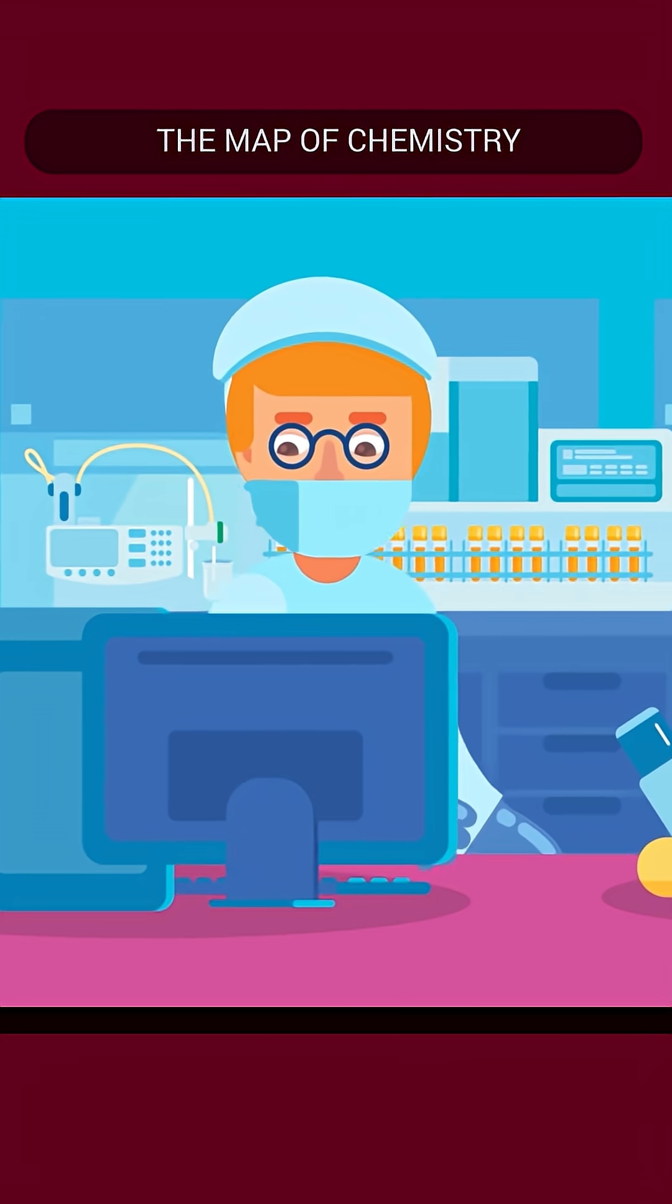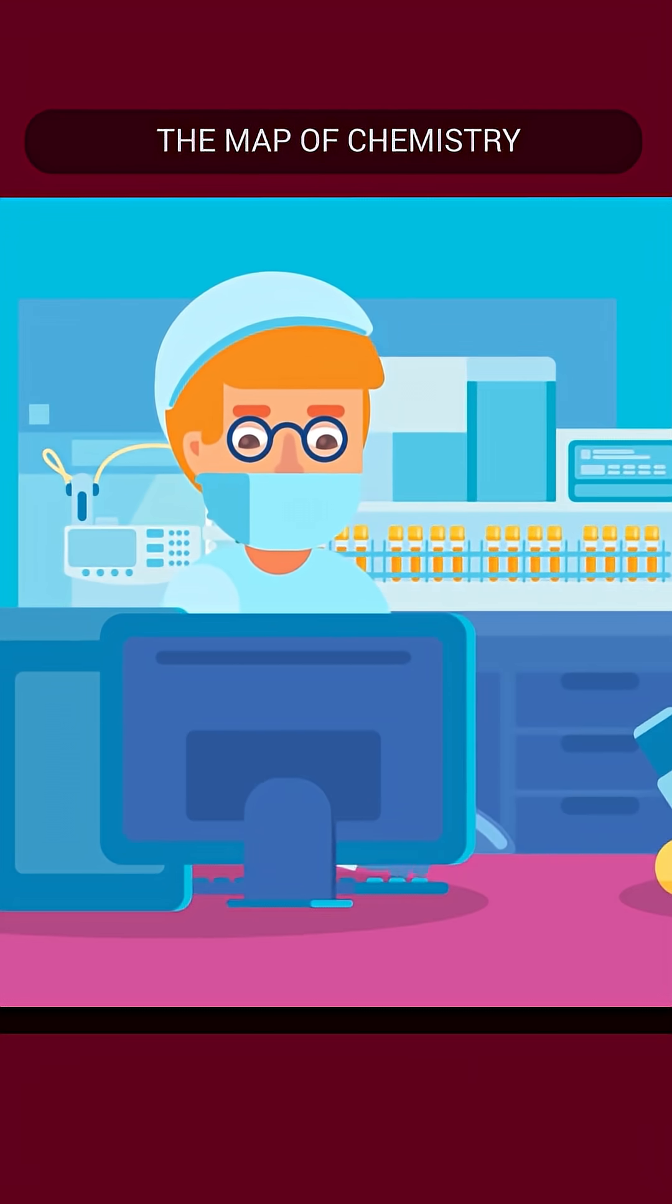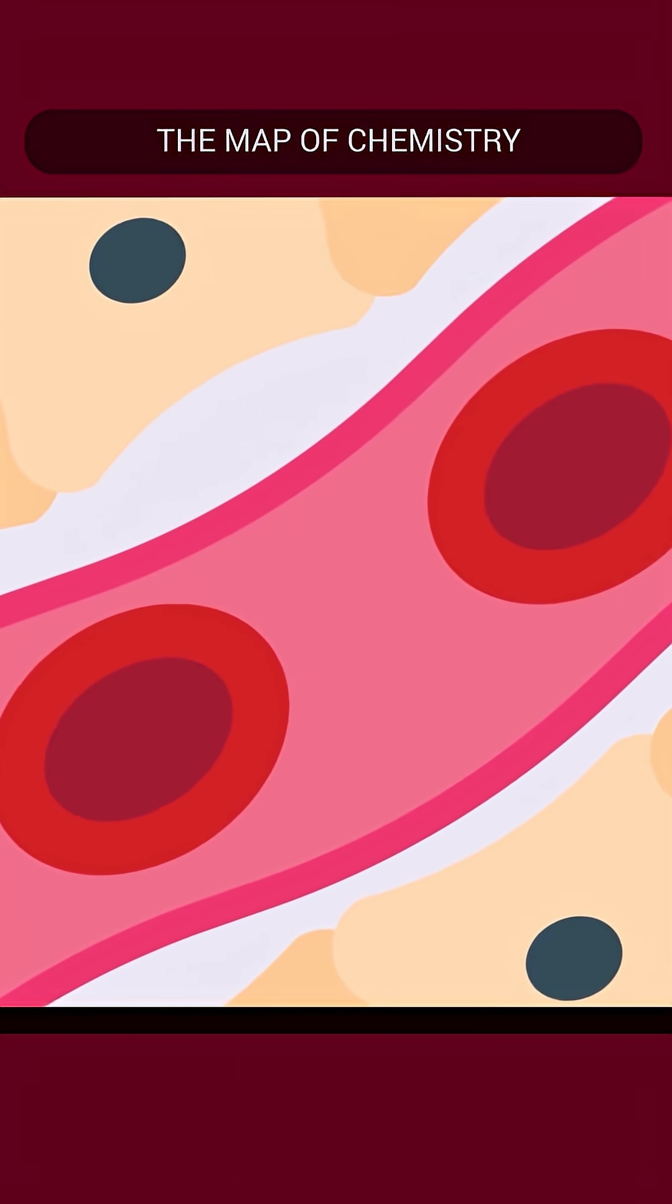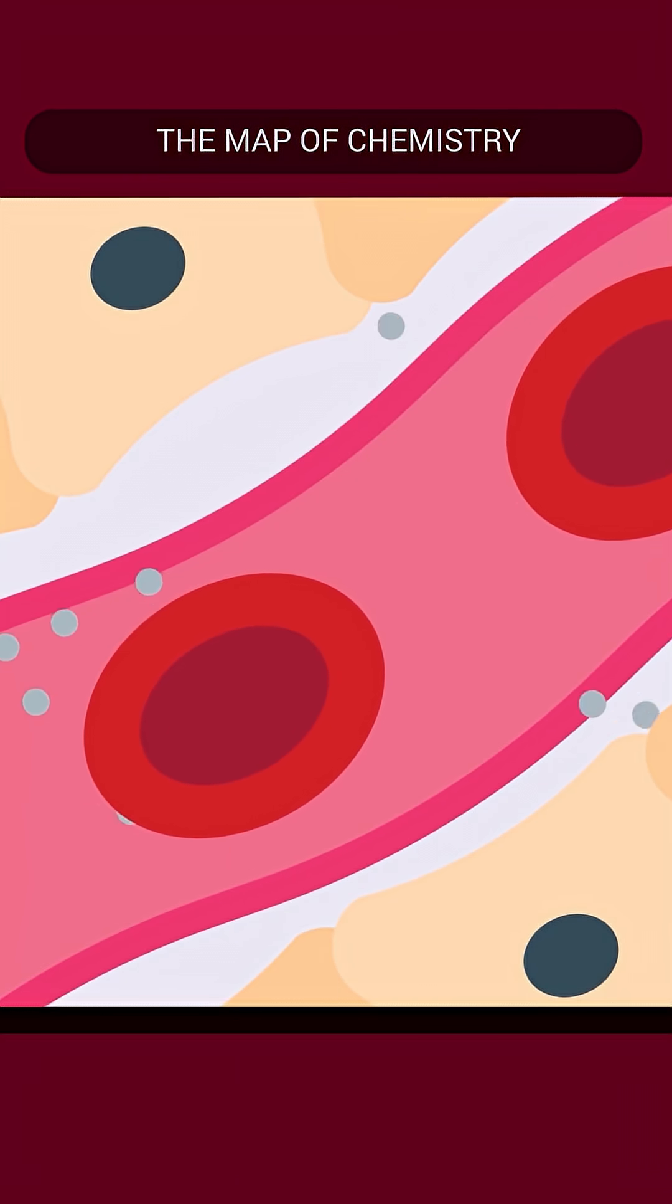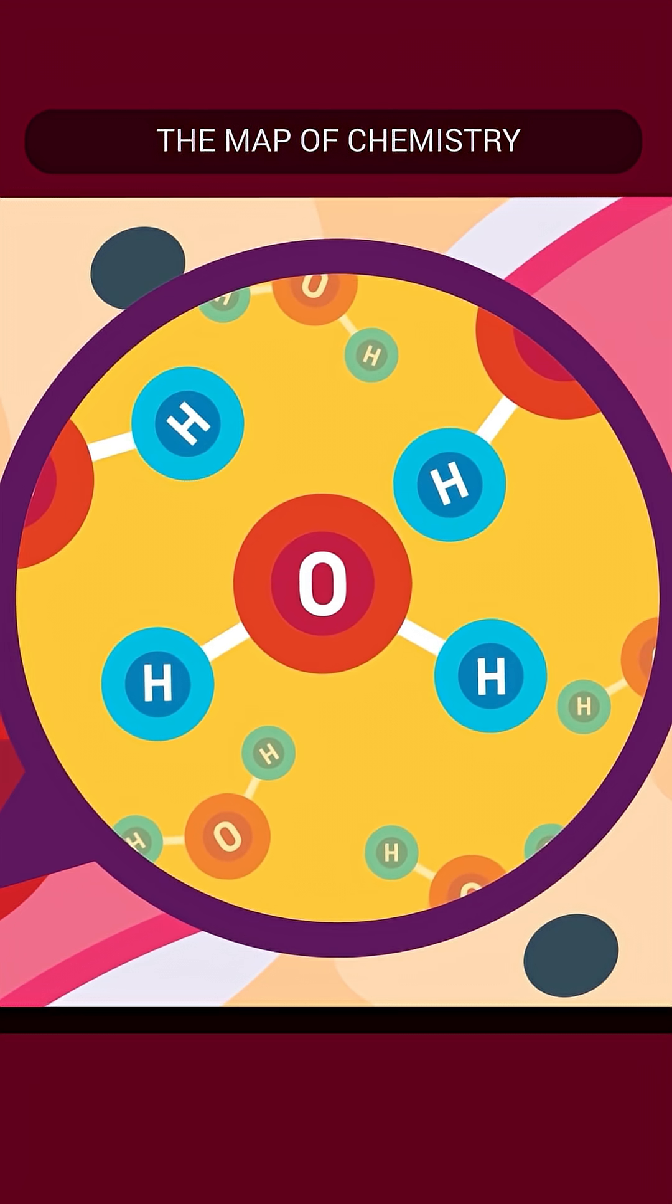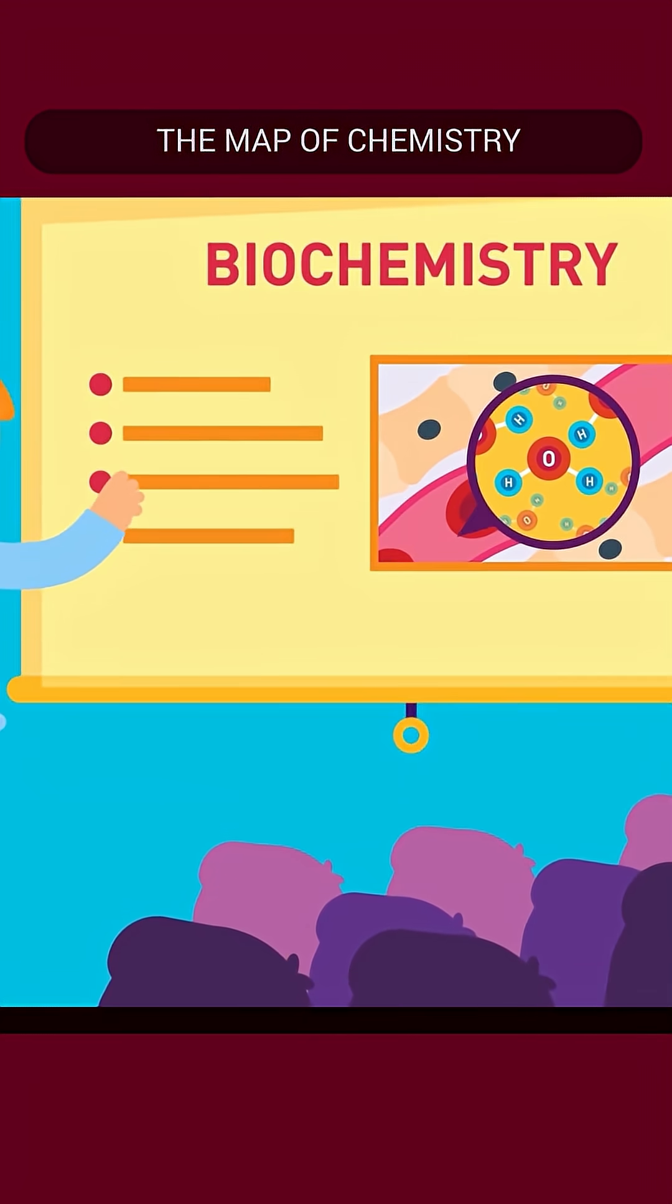The study of chemical processes in living organisms is called biochemistry. Everything in the body is made up of atoms and molecules of different chemical compounds like carbon, oxygen, and hydrogen. This is what we study in biochemistry.